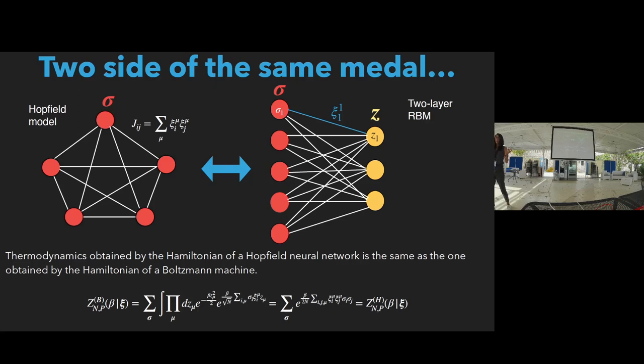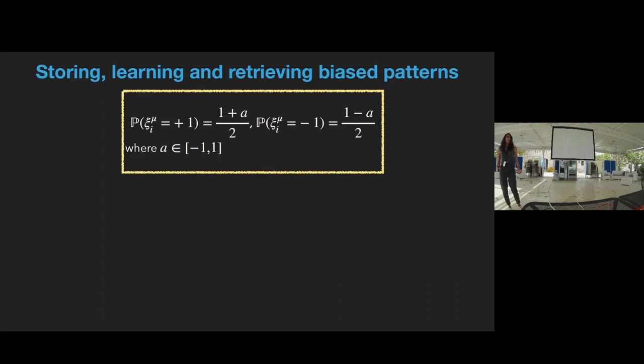Now, the thing is that these two models seem very different. In reality, they are two sides of the same model, because we have the Hopfield model that is good for retrieval, and the Boltzmann machine that learns. But starting from the partition function of the Boltzmann machine, we can obtain the partition function of the Hopfield model, and also the opposite. This is very nice, because some things that we know from the Hopfield model can be translated to the Boltzmann machine. For example, we can know that the weights of the Boltzmann machine are essentially the patterns stored by the Hopfield model.